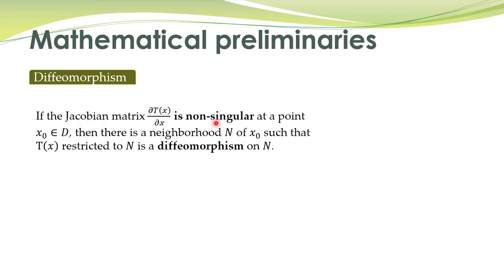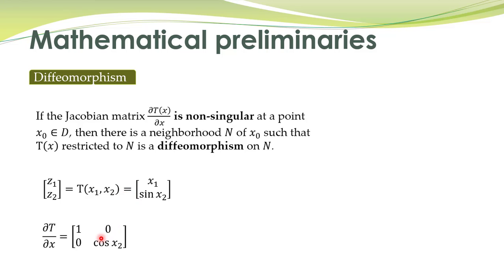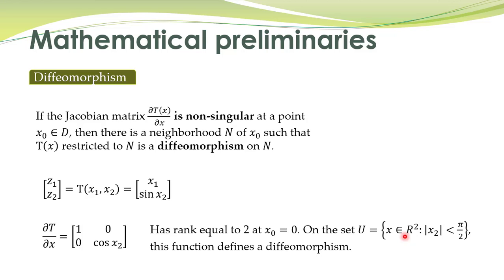Another way to check whether a transformation is a diffeomorphism is by computing the Jacobian matrix. If the Jacobian matrix is non-singular at a point x0, then in the neighborhood of x0 the transformation will be a diffeomorphism. So you need to compute this Jacobian matrix to determine if a transformation is a diffeomorphism; alternatively, you can find the inverse transformation and check whether both are smooth. For the same transformation, the Jacobian matrix is given, and in the domain defined by the corresponding set, this matrix is non-singular, which confirms that the transformation is a diffeomorphism in that set.